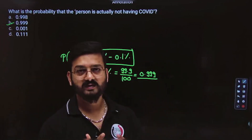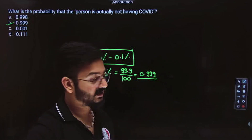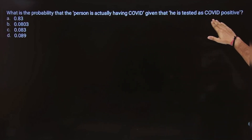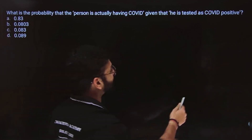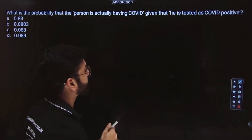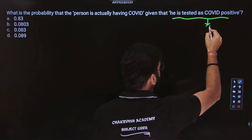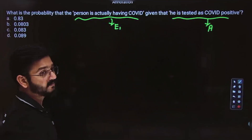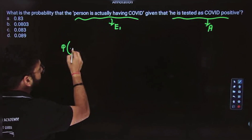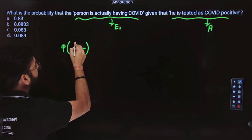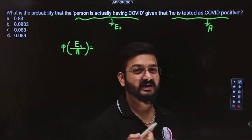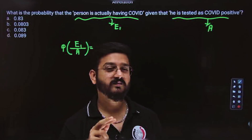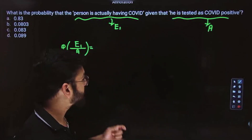The first three parts are very straightforward. We now have all the probabilities of the events. We need to combine all of them and use Bayes theorem. The question is: what is the probability that the person is actually having COVID, given that he is tested COVID positive? This is P(E1|A). You already found P(A|E1) and P(A|E2) — that's why this is called reverse probability. We use Bayes theorem to find probability in all situations involving reverse probability.